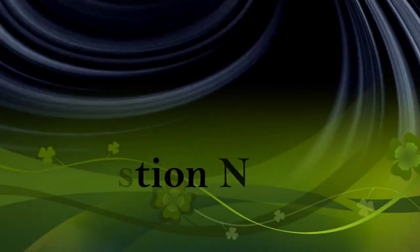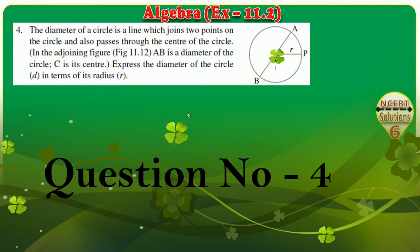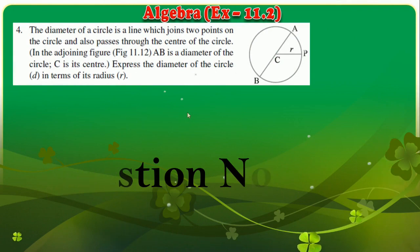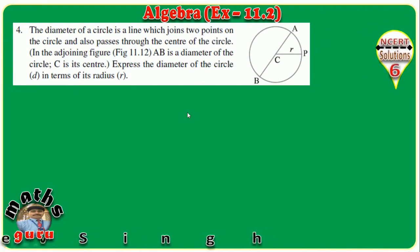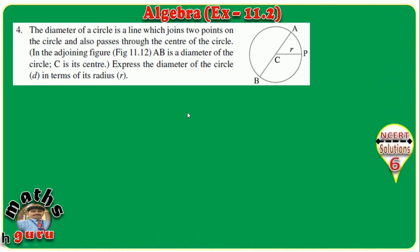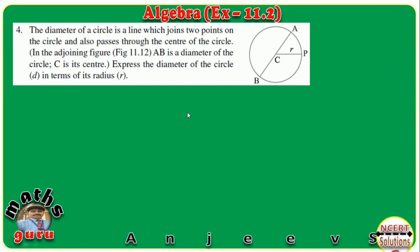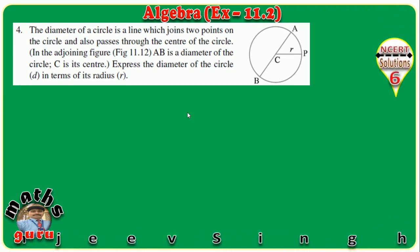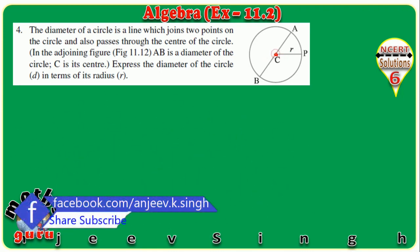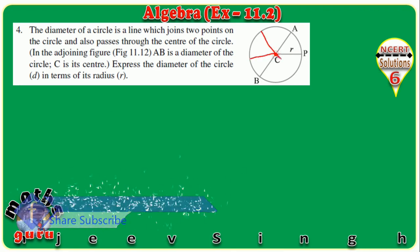The next question: a diameter of a circle is a line which joins two points on the circle and also passes through the center. AB is a diameter of the circle and C is the center. Express the diameter of the circle D in terms of its radius. When you have a circle, the distance from the center point to the boundary is called the radius.